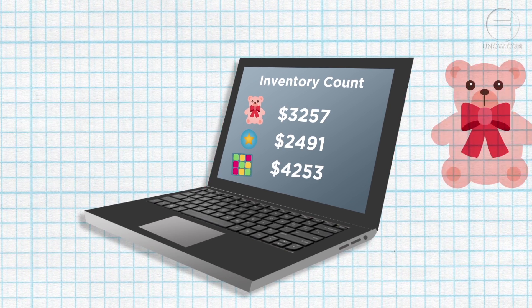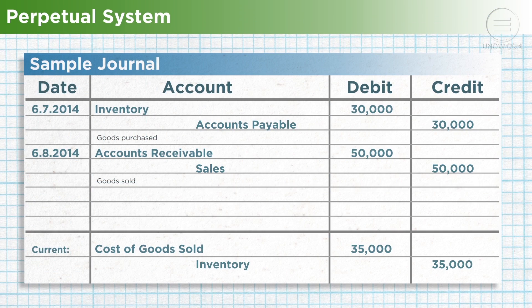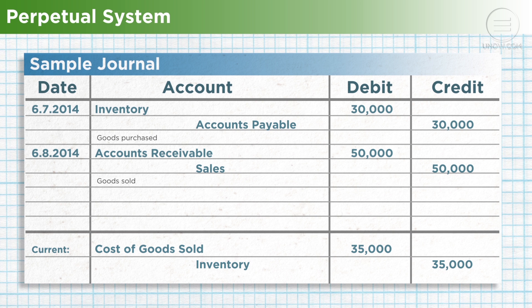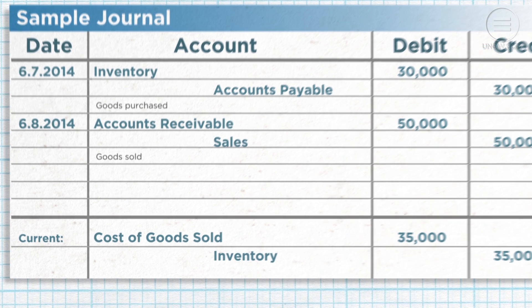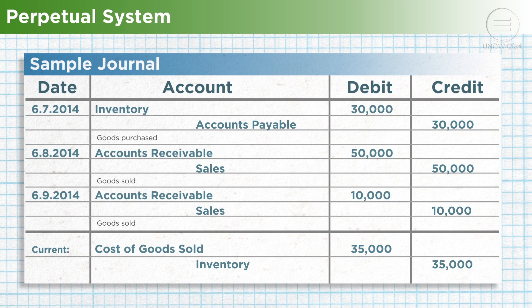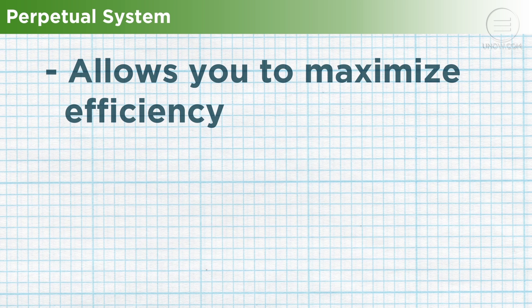Since the most recent balance is always available, the cost of goods sold is calculated and recorded in the accounting journal on a constant basis. If Johnson Trading Company set up a perpetual inventory system, it would generate journal entries such as these. You can see that the cost of goods sold currently stands at thirty-five thousand dollars, but as soon as the next transaction occurs, the system will automatically update.